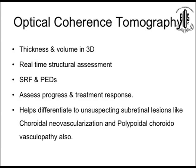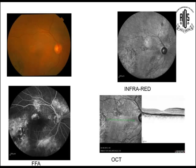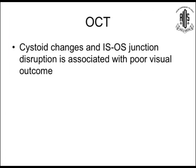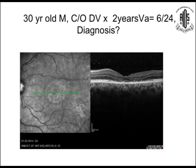Optical coherence tomography provides thickness and volume in three dimensions, and real-time structural assessment. Subretinal fluid and pigment epithelial detachments can be assessed, and it assists in monitoring progress without invasive investigation. It also helps differentiate unsuspected subretinal lesions like choroidal neovascularization and polypoidal choroidal vasculopathy. In the OCT photo of a chronic CSC case, you can see RPE changes and IS/OS junction disruption, which correlates with a poor visual outcome. In one case presenting like macular dystrophy in a 30-year-old, the OCT shows small fluid confirming chronic CSR, and you can see the disrupted junction and RPE changes.